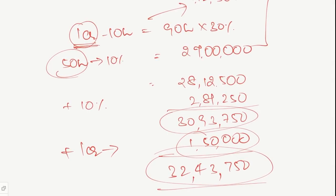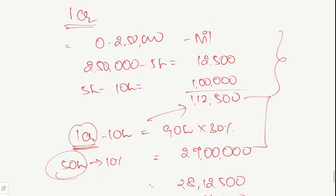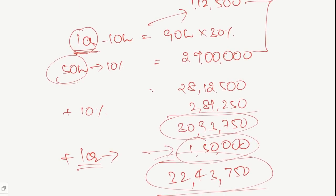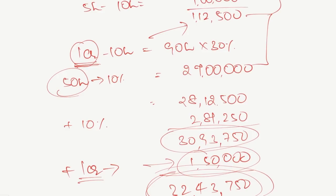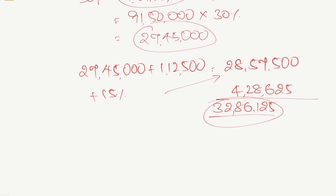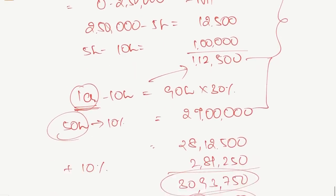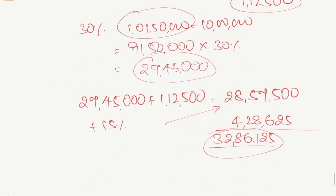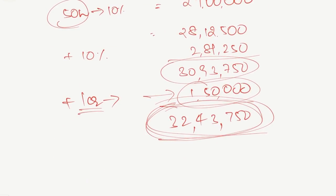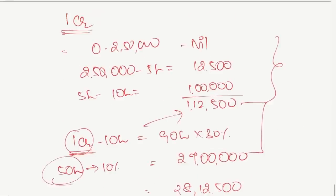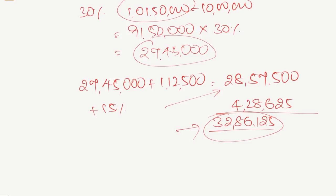The tax liability under marginal relief is 32 lakhs 43,750 before cess. Comparing both: the tax liability without marginal relief was 32 lakhs 86,125, and with marginal relief it is 32 lakhs 43,750. Since the marginal relief figure is lower, that is the tax liability which will be considered. The lower of the two is always taken when marginal relief applies.